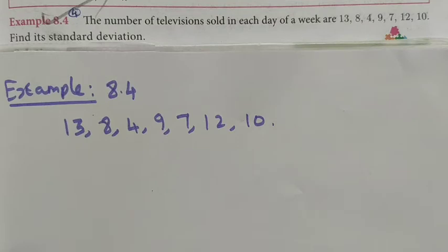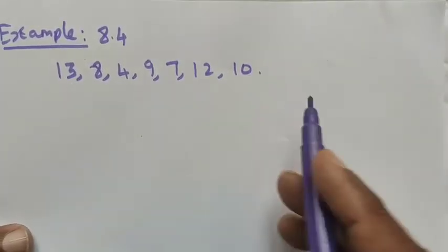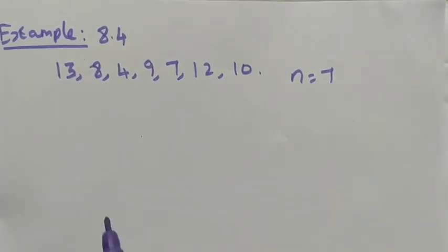See, the given data is very small, so we can use the direct method to find out the values. First of all, the direct method. The given data is 1, 2, 3, 4, 5, 6, 7, so n is equal to 7. I am using direct method to find out this value.